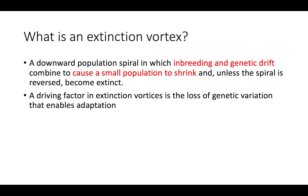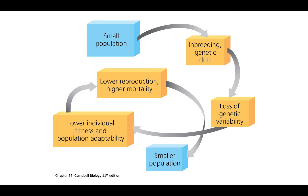A driving factor in these extinction vortices is going to be the loss of genetic variation that enables adaptation. To visualize this, we can start up here with our already small population, and then due to inbreeding and genetic drift — which is random changes in genotypic frequencies within a population — we'll have a loss of genetic variability. Because we've lost genetic variability, we have lower individual fitness, which means individuals now have a harder time surviving and reproducing, and on the population level, we have a reduction in that population's ability to adapt to a changing environment.